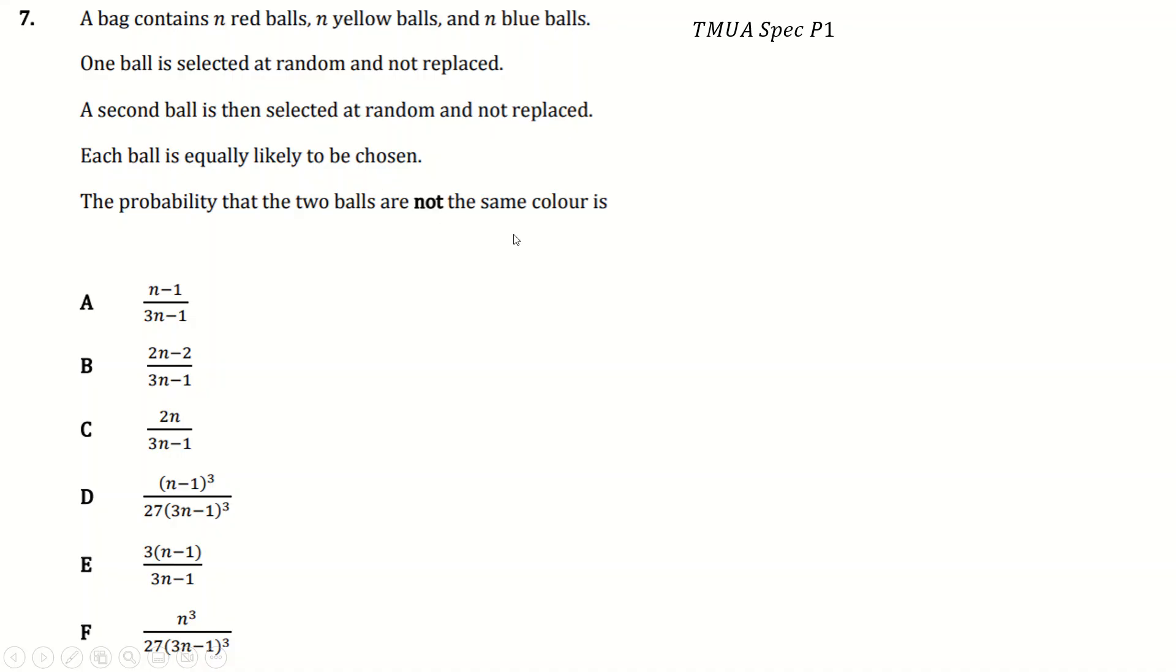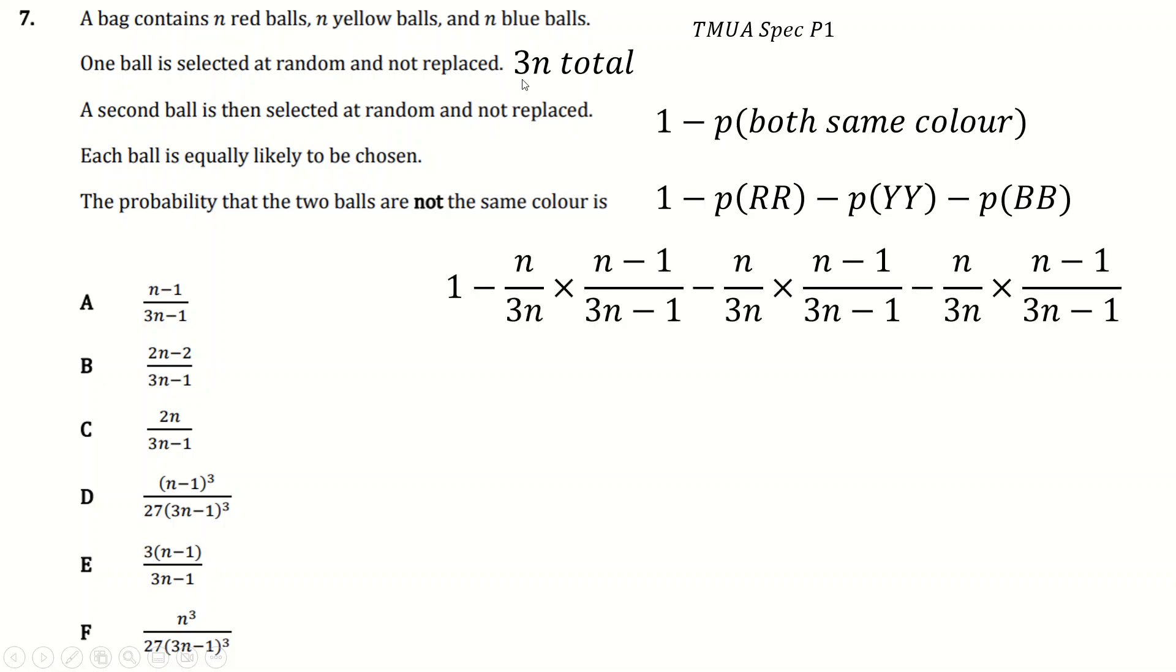But if you're just doing not the same color, you can just do one minus the two probabilities of being both the same color. So minus one minus the probabilities of both being red, minus the probabilities of both being yellow, minus the probabilities of both being blue. Now there are 3N balls in total. So the probability of taking an N the first time is N over 3N. And the probability of taking red the second time if it's not replaced is N minus one over 3N minus one.